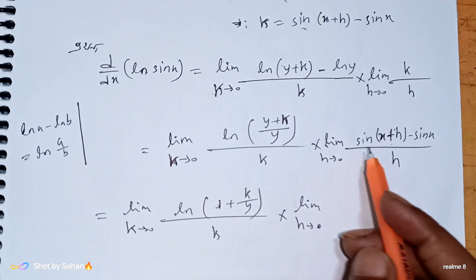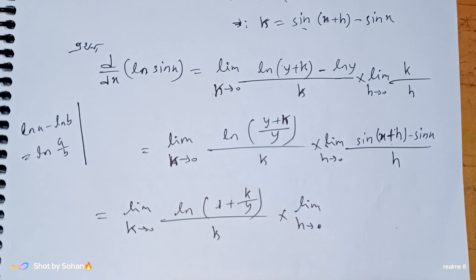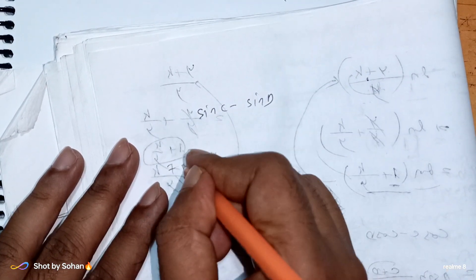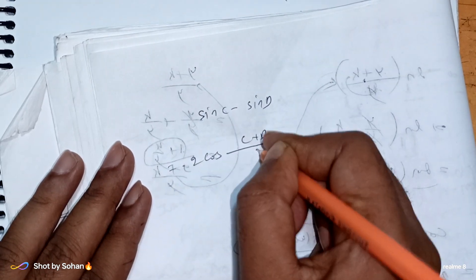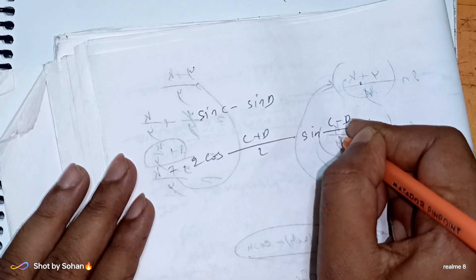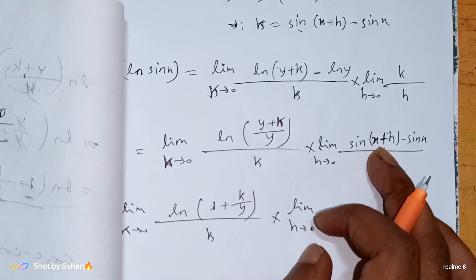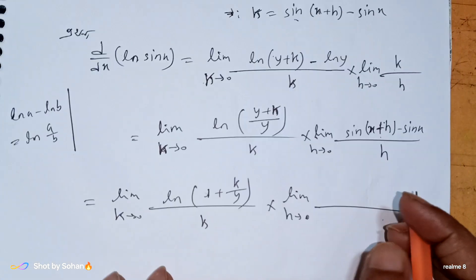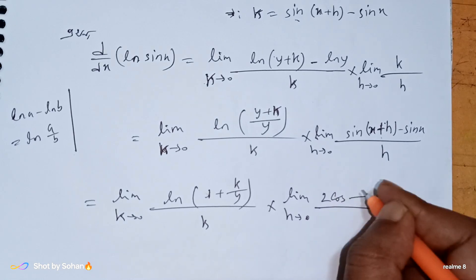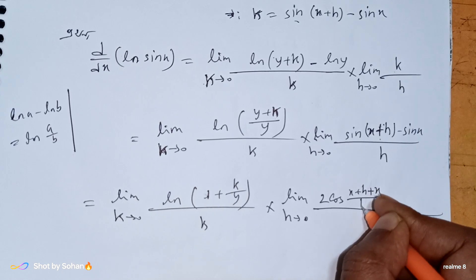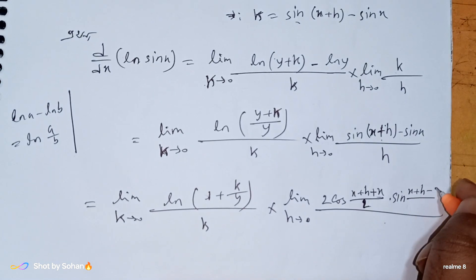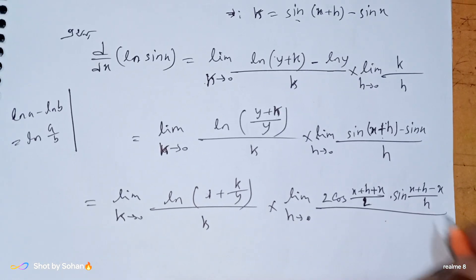k tends to 0. We apply the identity: sin C minus sin D equals 2 cos((C+D)/2) into sin((C-D)/2). So sin(x plus s) minus sin x equals 2 cos((2x plus s)/2) into sin(s/2), by 2.